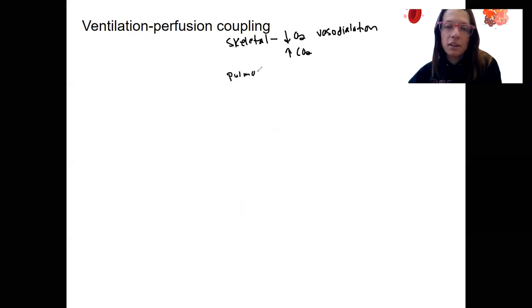So in our pulmonary, actually I'll say in the alveoli, it's going to be high O2 that causes vasodilation. That kind of makes sense, right? Like if we have high oxygen, we want to have more blood flow to get that oxygen to the body.